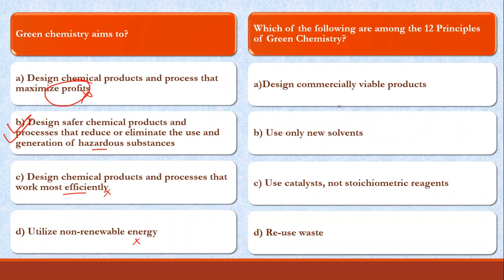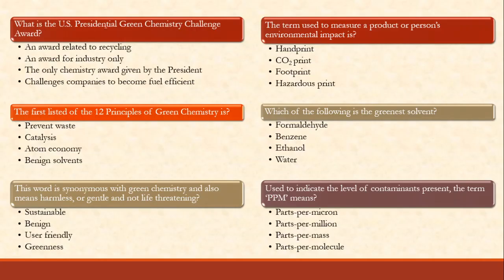Which of the following are among the 12 principles of green chemistry? Design commercially viable products? No, it is not meant for making profits. Use only new solvents? No. Use catalysts? Yes. Reuse waste? Which one is in the principle? Use catalysts is the clear-cut principle, while reuse waste is more of an aim. The principle is: use catalysts.